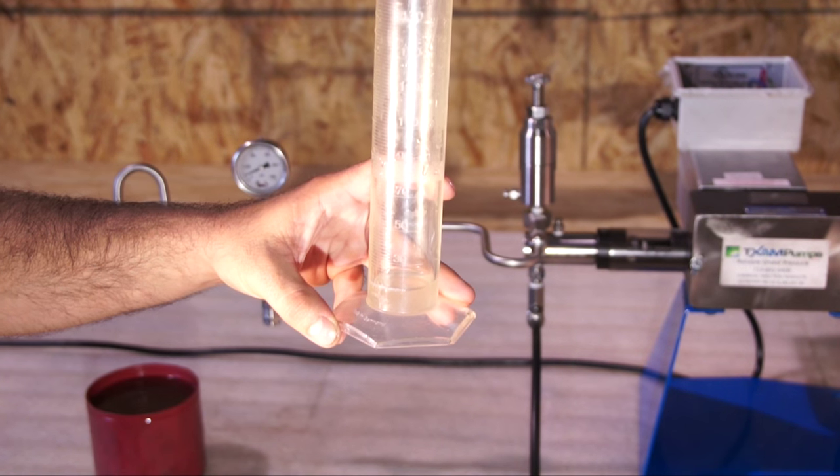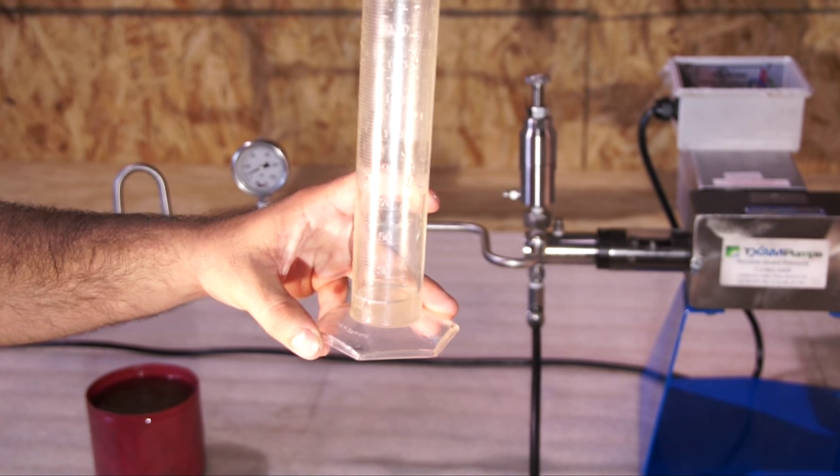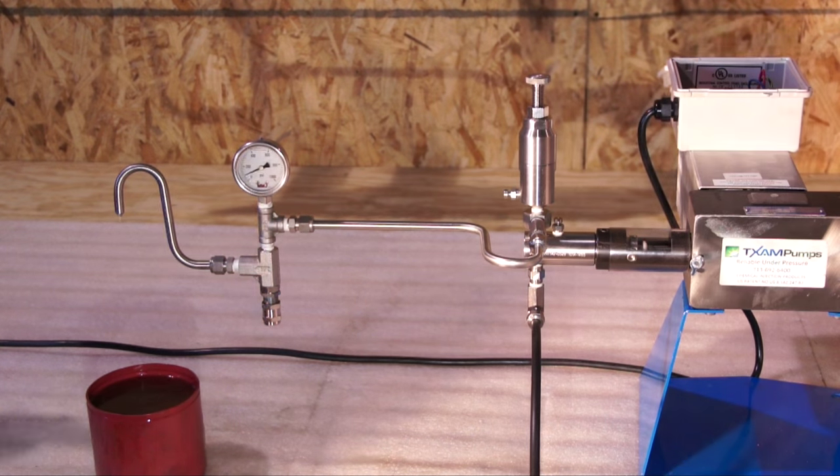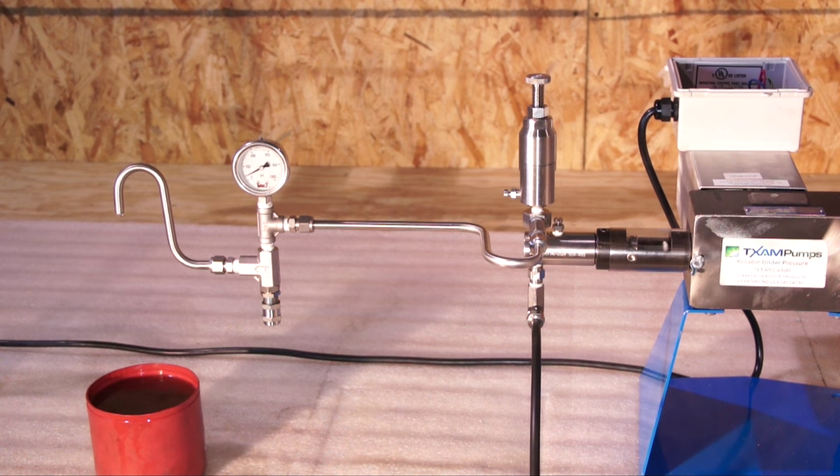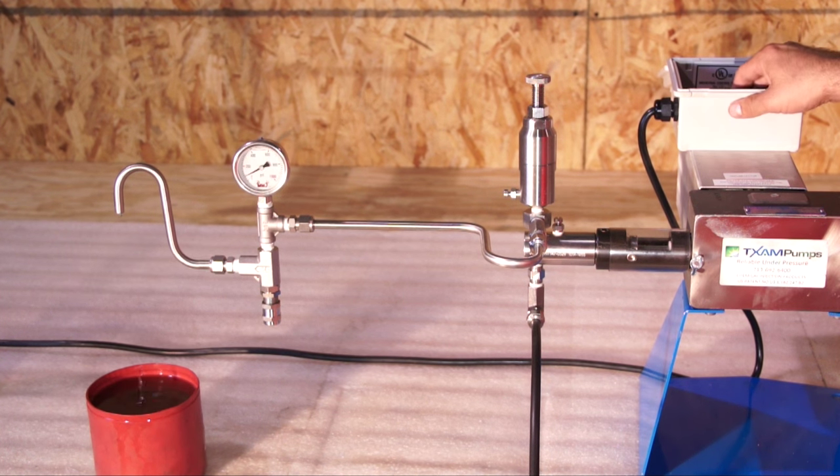As I said before, if you cannot achieve your desired injection rate by loosening the rate adjustment bolt, you can then move on to your pump controller and adjust that down to finely tune your injection rate.